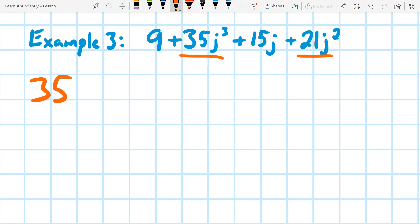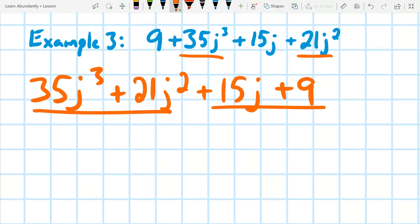And if I do that, I have 35j cubed plus 21j squared plus 15j plus 9. And now that I have it in order, it's going to be much easier to pull apart.